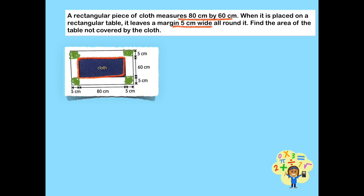What is 5 cm about? When the table cloth was placed on a rectangular table, there was a margin that was left all around it, and that is 5 cm wide, as shown in the illustration. We need to find the area of the table not covered by the cloth. In order to answer the given problem, we will first find the area of the rectangular table. Let's remember the formula: length times breadth.